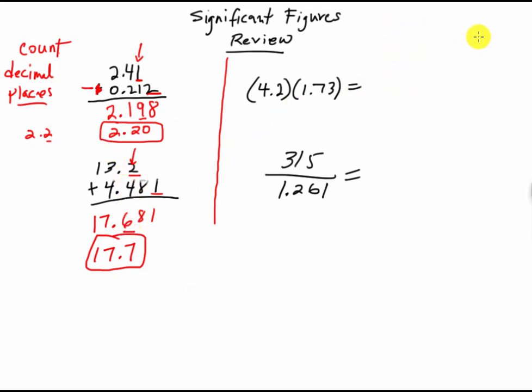Over here, multiplication and division, we count sig figs. So 4.2 times 1.73, and you end up with 7.266. Now, if we look at this number here, here we have 2 sig figs, and here we have 3 sig figs. So my final answer should have 2.